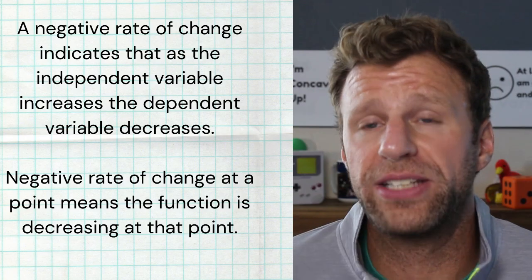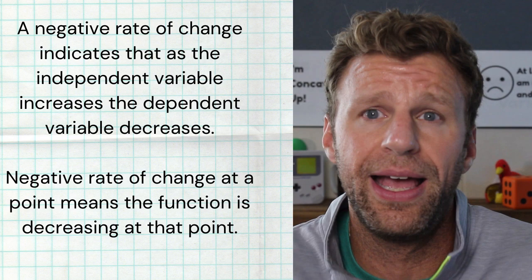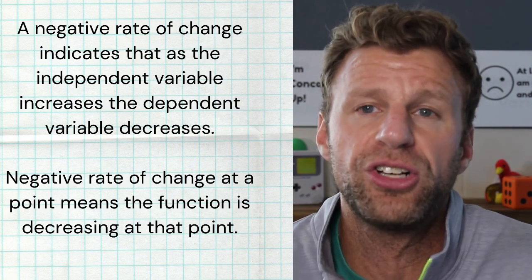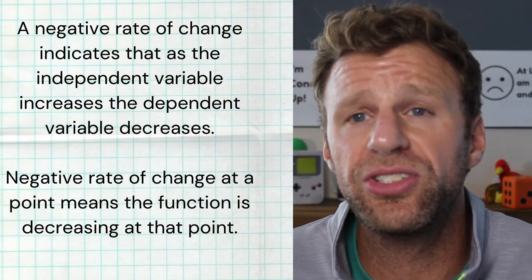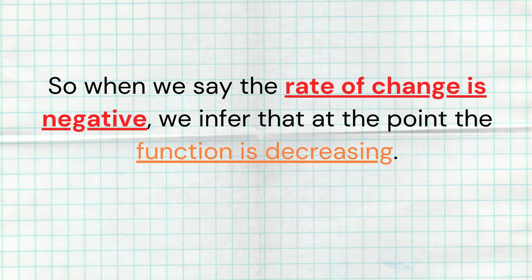A negative rate of change at a point means the function is decreasing at that point. On the graph, two red points in a decreasing interval both have negative tangent line slopes. When the rate of change is negative, we infer the function is decreasing at that point.